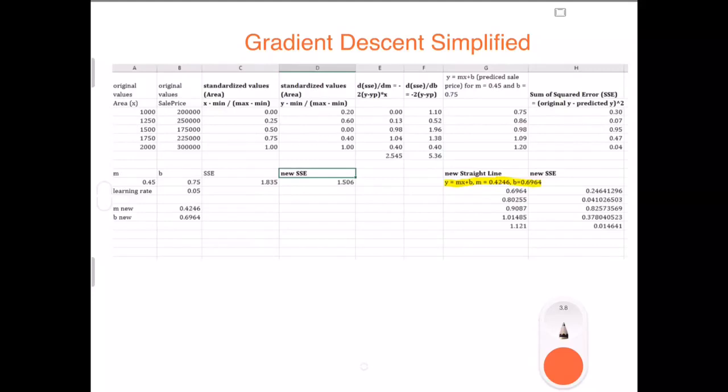Hello friends, let's continue with our example in the Excel spreadsheet. Previously you have seen column A which was the original values for X, the square feet area, and the original sale price in thousands of dollars.